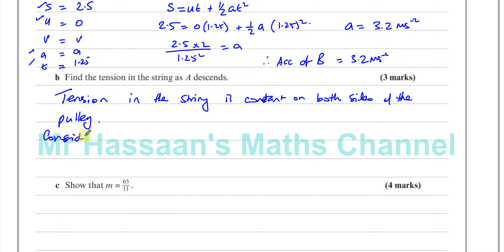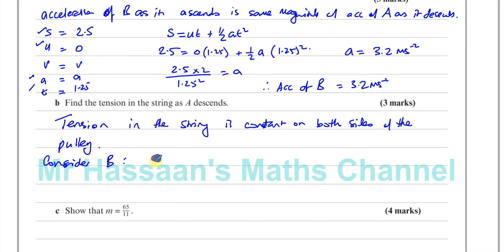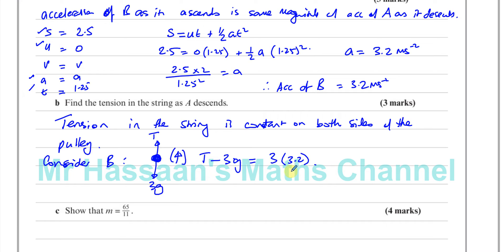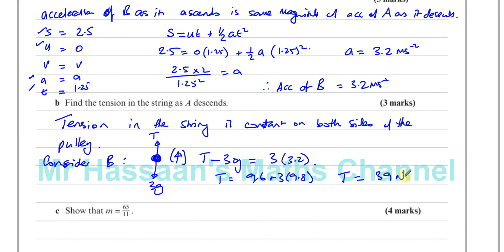Considering particle B: it has 3G acting downward and tension T acting upward. Taking upwards as positive and applying F = MA: T − 3G = 3 × 3.2. So T = 9.6 + 3 × 9.8 = 9.6 + 29.4 = 39 newtons. The tension in the string is 39 newtons. That's part B done.